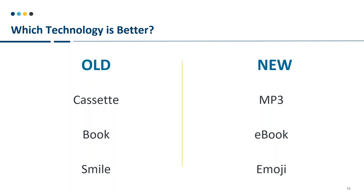I'd love to have a discussion around this, but I'll just touch a couple of key points. Almost unanimously we agree that MP3s have improved on a technology many of us had — the cassette. The MP3 is an improvement and has fully replaced the cassette. The book and ebook is a really interesting example — you came down 60/40, and every time I do this poll it's somewhere in the 50s or 60s. We cannot say today that the ebook has replaced the book.